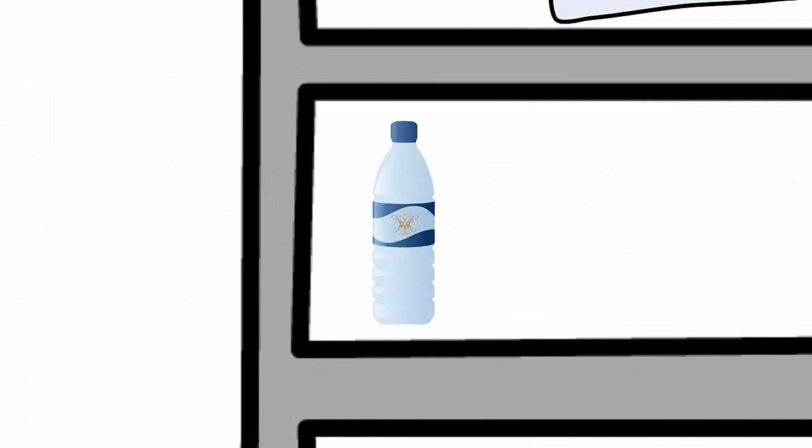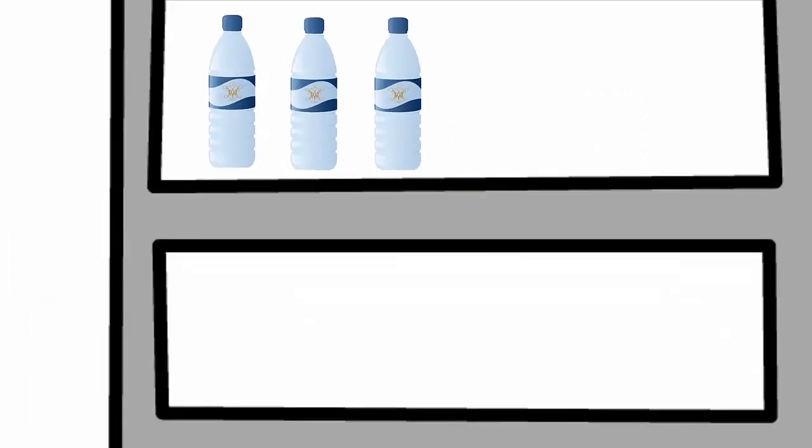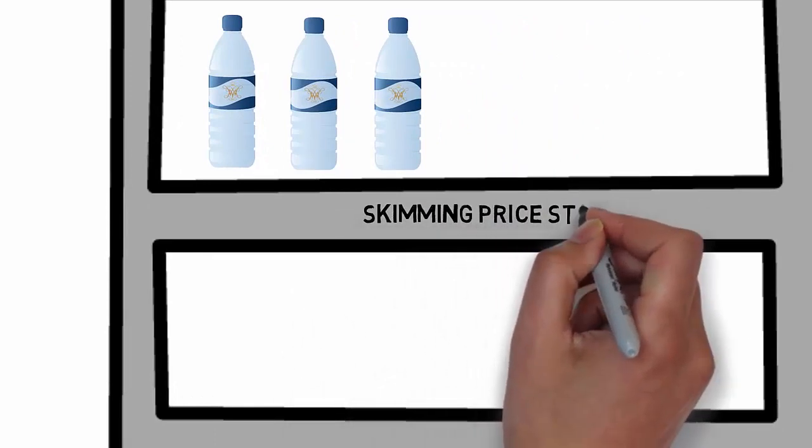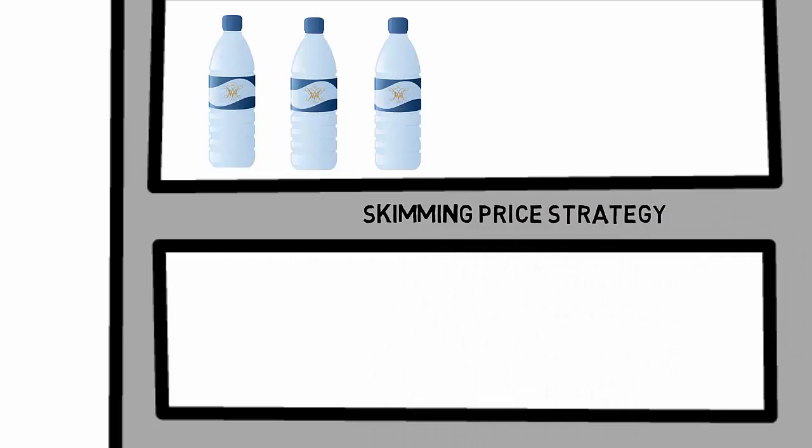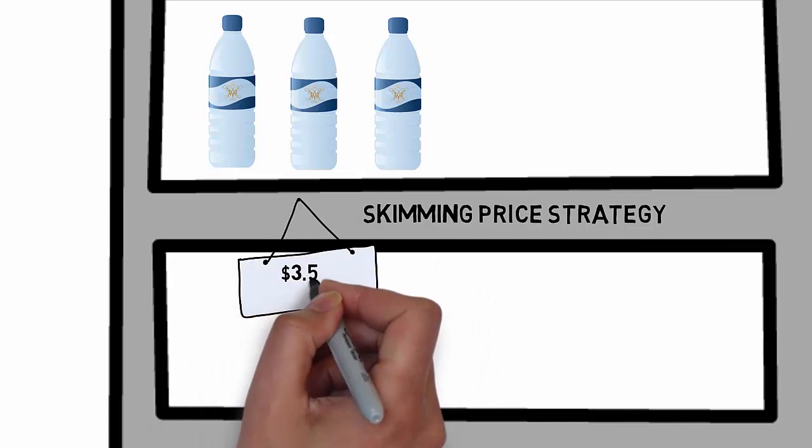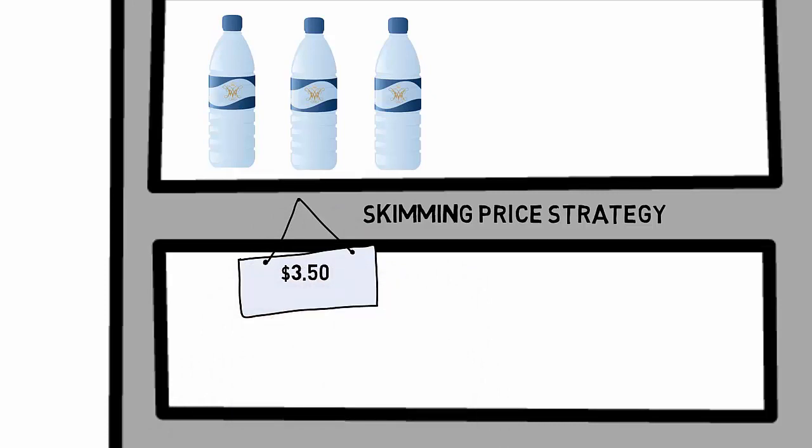In the introduction stage of the product lifecycle, William & Mary would be the only bottled spring water in the market. As such, we could decide to adopt a skimming price strategy, where we price our product at a premium with the assumption that our spring water will be viewed as a unique product in the market that is worthy of a higher price.